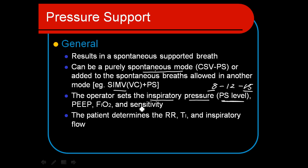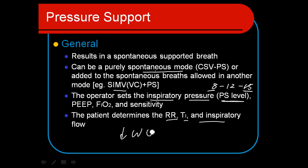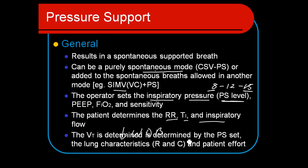We adjust the PEEP, FiO2, and the sensitivity to make sure it's working correctly and meeting the patient's needs. The patient determines their respiratory rate, TI, and inspiratory flow, so they have total control over the breath, but their work of breathing will be decreased dramatically. That's the key element — it decreases the work of breathing, and we control that with the pressure support level set.